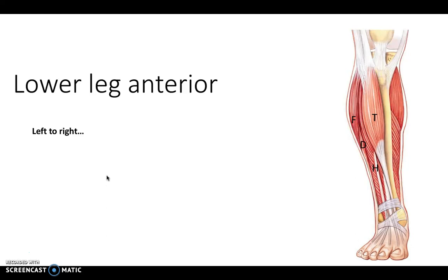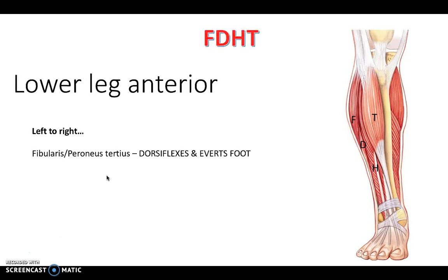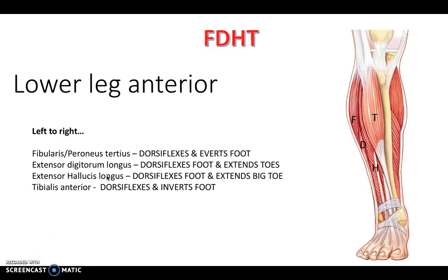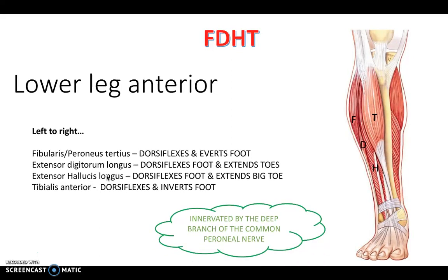Finally, let's take a look at the lower leg. Anteriorly from left to right we have FDHT: fibularis or peroneus tertius - the same muscle named differently in certain textbooks. Then extensor digitorum longus, which extends the toes. Extensor hallucis longus, which extends the big toe - hallucis being another word for big toe, just as pollicis was for the thumb. And tibialis anterior, which dorsiflexes and inverts the foot. This mirrors the function of extensor digitorum in the forearm. This compartment is innervated by the deep branch of the common peroneal nerve.